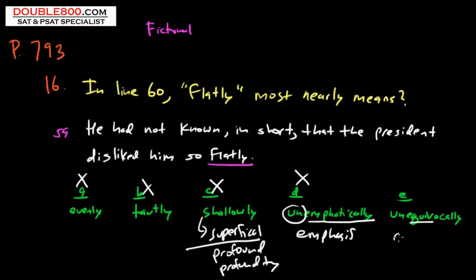Equivocate means to be ambiguous, to sort of intentionally mislead. But if something is unequivocal it is absolutely without any qualification. So an unequivocal fact is incontrovertible. It can't be disputed or debated. It is absolute. It is complete. It is flat in this context.